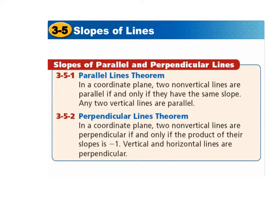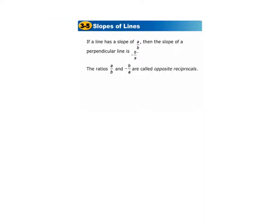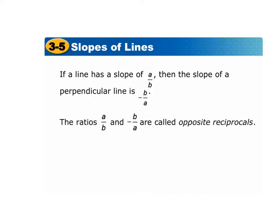We now have two theorems. The parallel lines theorem states that in a coordinate plane, two non-vertical lines are parallel if and only if they have the same slope. The perpendicular lines theorem states that two non-vertical lines are perpendicular if and only if the product of their slopes is negative 1. If a line has a slope of A over B, then the slope of a perpendicular line is negative B over A — the opposite reciprocal.